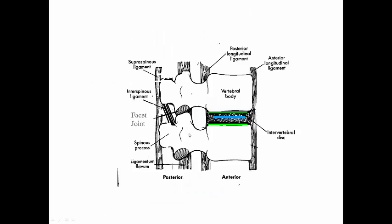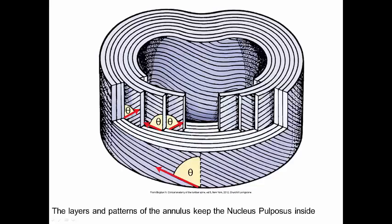Let's take a look at this. Here you can see the intervertebral disc. This is the nucleus pulposus. The green is indicating the cartilaginous endplates. Here is the annulus fibrosis — you can see it's a lot of collagen fibers that go in very different orientations.